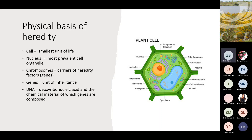Now, just to see what and where this is - we call it the physical basis of heredity. In our plants, the cell is the smallest unit of life. Within the cell there's a nucleus, and in the nucleus there are chromosomes, which carry the heredity factors called genes. The genes are a unit of inheritance, and they are made up of DNA - deoxyribonucleic acid - the chemical material of which genes are composed.